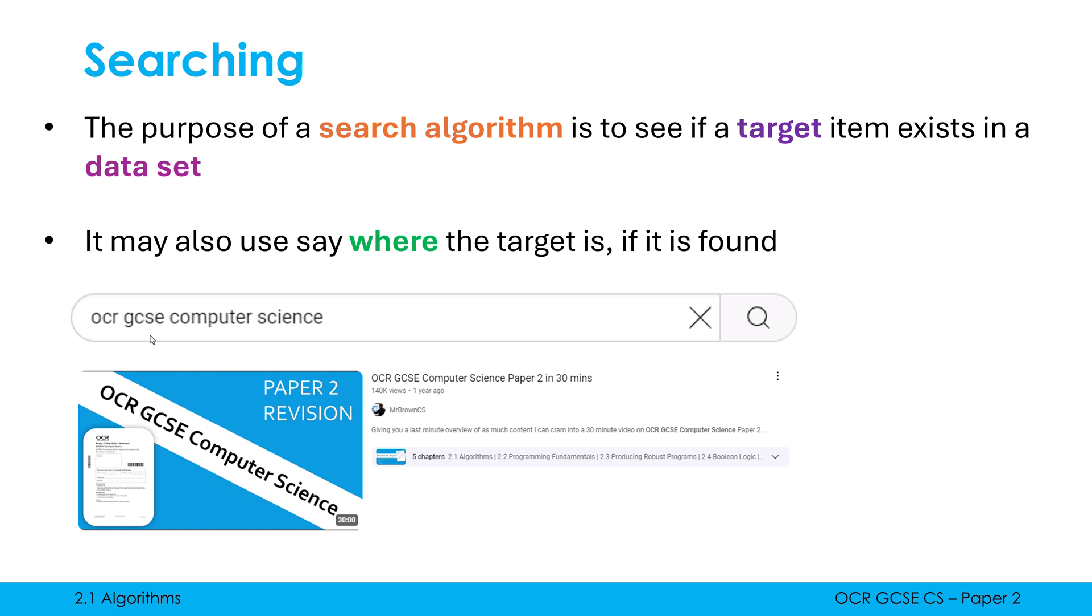You know, if I type in OCR GCSE computer science, I see loads of different videos. YouTube has ranked these videos in a particular order based on lots of other factors. And all those other factors don't come into a classic search algorithm like linear search or binary search. So for GCSE, we're ignoring all the relevance ranking. We're just focusing on is the target in the dataset and potentially also where it is located.